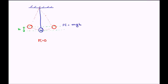We know that the bob is released at the extreme position, so the velocity at the extreme position is zero. At the other extreme, the bob also stops momentarily before moving back toward the mean position, so the velocity there is also zero. Since the velocity is zero at both extreme positions, the kinetic energy at those positions is zero — there is no motion.